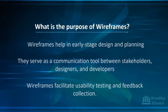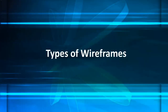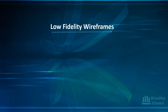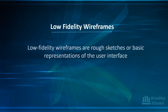Now let's talk about the types of wireframes. The first type is low fidelity wireframes. Low fidelity wireframes are rough sketches or basic representations of a user interface. They're commonly hand-drawn or created using simple tools. They focus on conveying the overall structure or layout without any detailed design elements — just like a sketch or draft, giving an example of what it might look like.